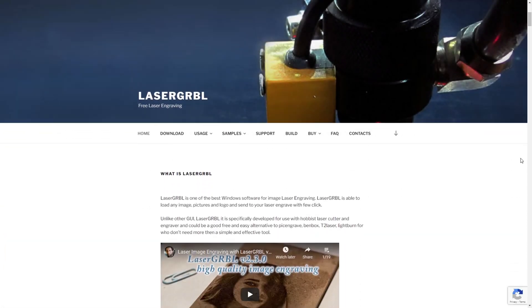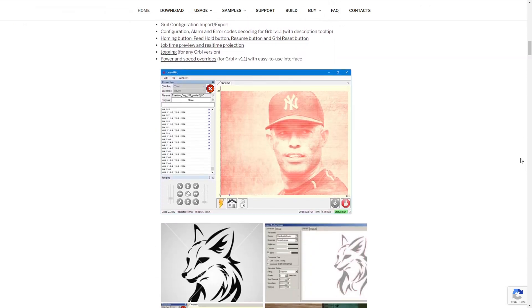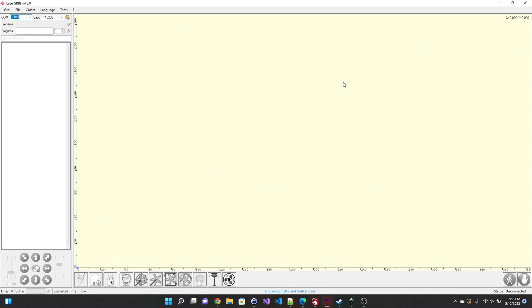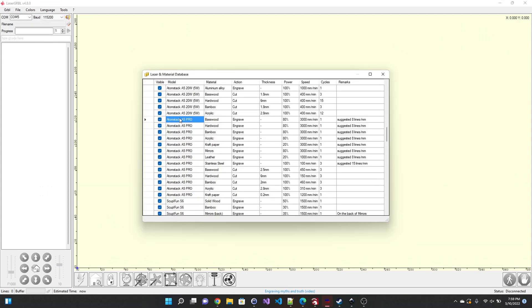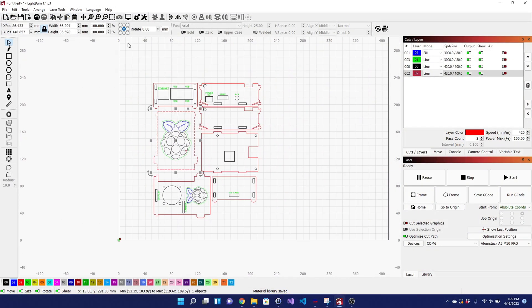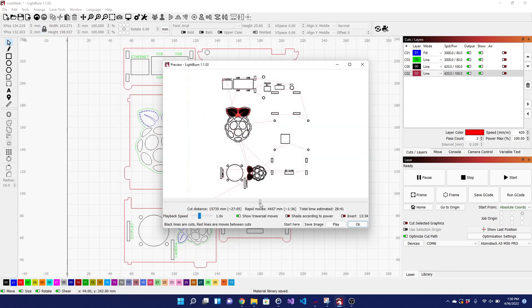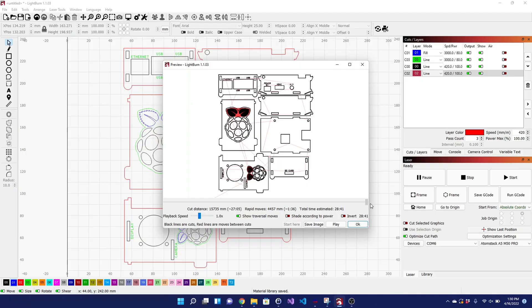As for software, Atomstack recommends using Laser Gerbil or Lightburn to control the laser. Laser Gerbil is a free and open source tool for Windows, and the built-in material library includes pre-built profiles for a variety of materials for the Atomstack A5. That pre-made material library is awesome, and those profiles were spot on. Lightburn is a paid software, but provides a 30-day trial. I ended up really liking Lightburn, so most of my testing was done using it. I did pull over all the material settings from Laser Gerbil, though.